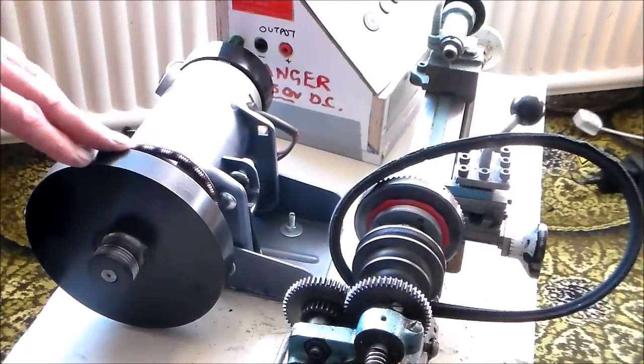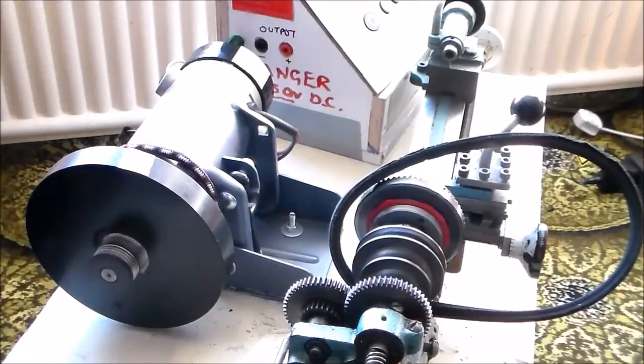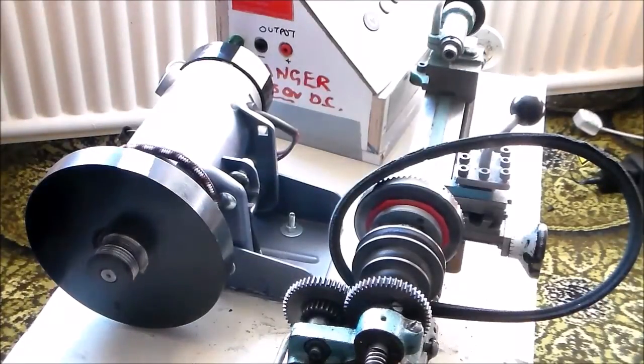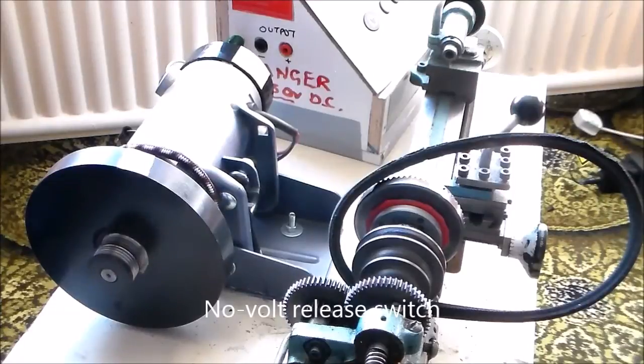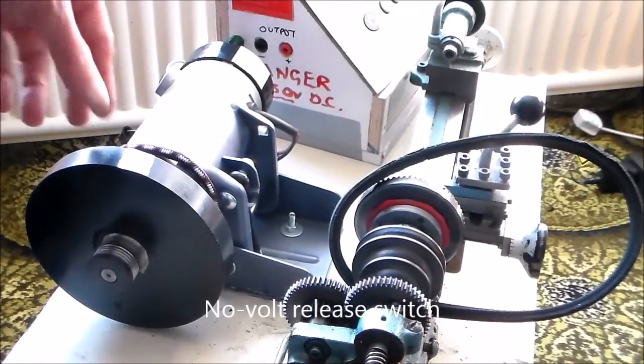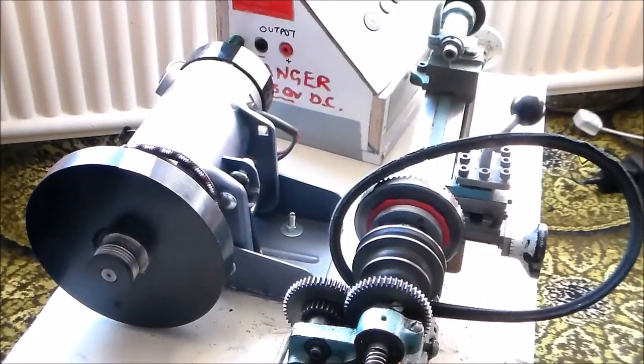One of the problems when you retrofit something is whether you're going to have a no-volt release switch. Basically what that means is if the power goes out, and that could happen, and then comes on again, if you just have a simple on-off switch like a light switch, your motor will be live and will suddenly come on as the power resets or comes on again.